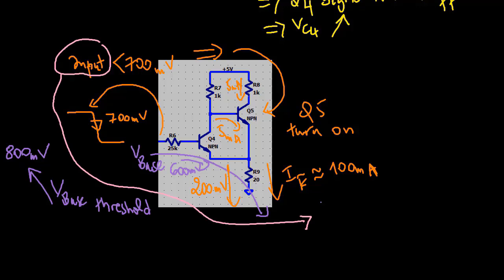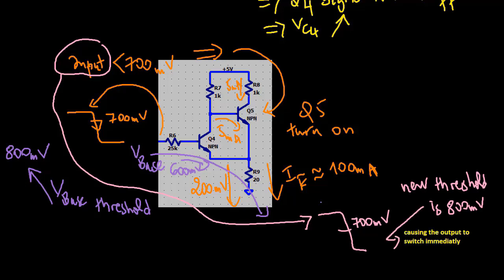So the input voltage which had just dropped below 700 millivolts now finds itself well below the new threshold causing the output to switch abruptly. With this action the Schmidt trigger turns a slowly moving waveform into an abrupt transition.